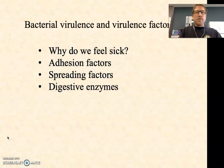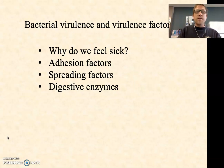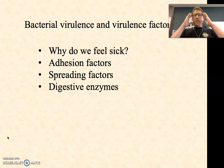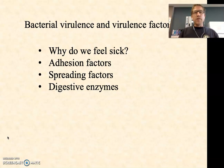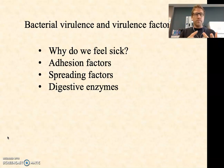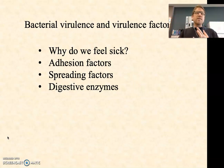In part one, we talked about opportunistic versus acquired pathogens, and hospital-acquired and community-acquired pathogens. What we want to do now is answer the question of why we feel sick. We'll briefly touch on that, and then we're going to look at three categories of virulence factors: adhesion factors that allow bacteria to adhere to tissue, spreading factors that allow them to invade more deeply, and digestive enzymes that allow them to feed on your tissues.